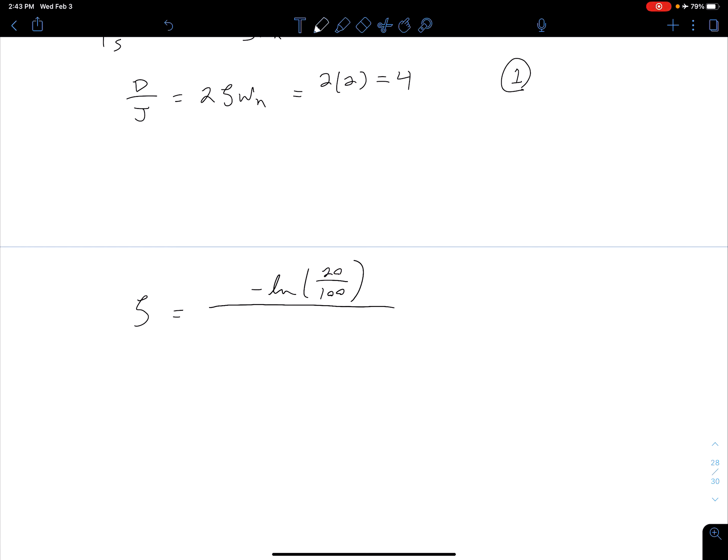In the numerator we have negative natural log of 20 divided by 100 where this 20 is our desired percent overshoot. In the denominator we have the square root of pi squared plus natural log squared of 20 divided by 100. Plugging that in we get that our damping ratio is approximately 0.456.